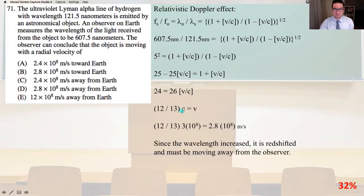So 12 over 13 C equals V. 12 divided by 13 times the speed of light 3 times 10 to the 8 equals 2.8 times 10 to the 8 meters per second. Since the wavelength increased, it is red shifted and must be moving away from the observer. And that is answer D.